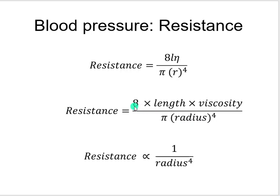What happens if blood vessel length increases from a hundred to a hundred and thirty miles? There is a lot more peripheral resistance, a lot more piping to get through, which leads to an increase in pressure. This can happen in obesity — when a person gains a large amount of weight, that fat tissue becomes vascularized through angiogenesis, literally growing more blood vessels and increasing peripheral resistance and blood pressure.